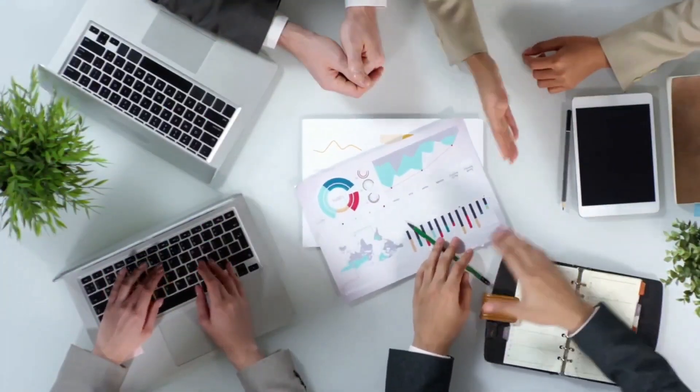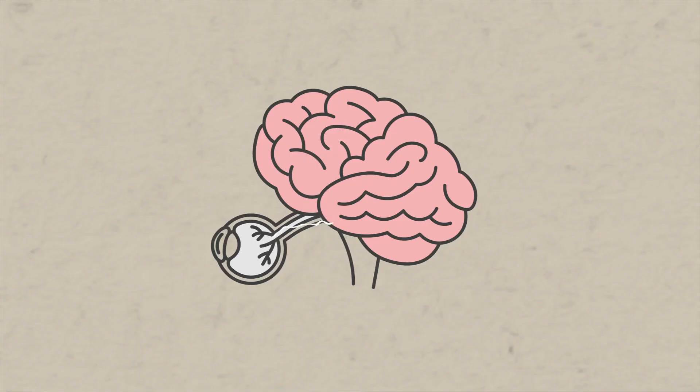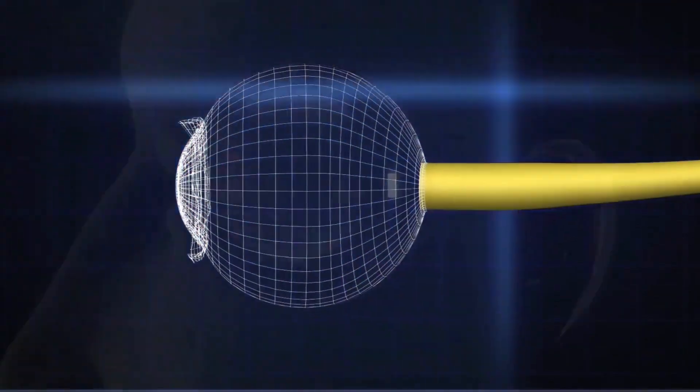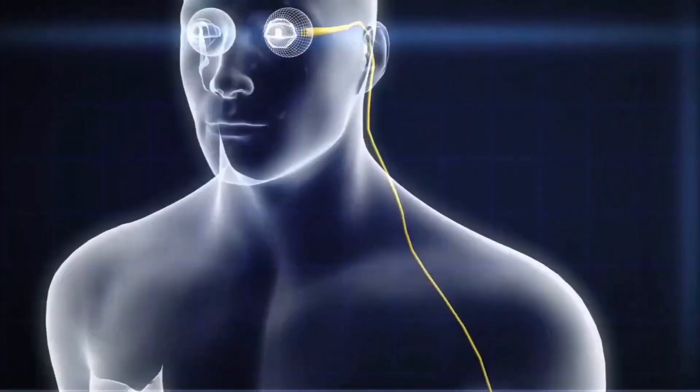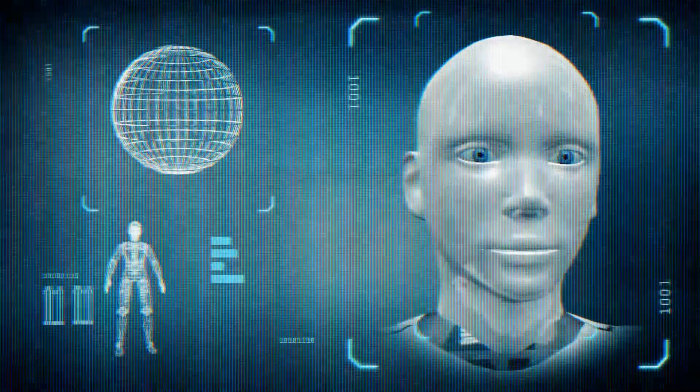The bionic eye works by converting light into electrical signals that can be interpreted by the brain. The device is implanted in the eye and uses an array of electrodes to stimulate the remaining healthy cells in the retina, which then send signals to the brain to create an image.